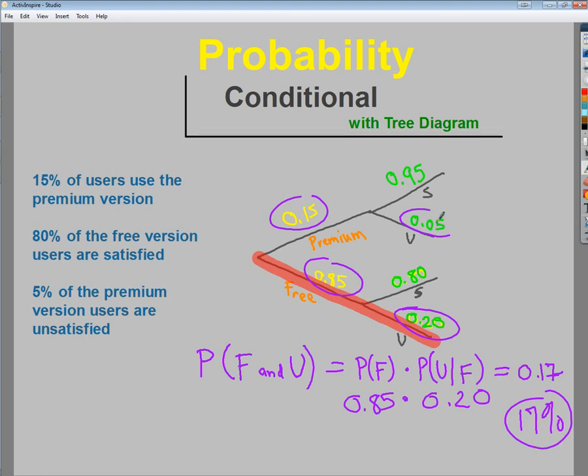Whereas right now if my entire user base, 17% of that user base is a free user who's unhappy. So I need to look at those little demographics and see what I need to shift to gain, to increase market and whatever it happens to be. But anyway, that's probability with condition, conditional probability with tree diagrams. It's a nice way to organize things if you have to do the break. So just an option.